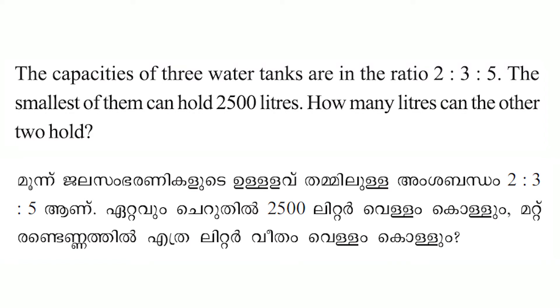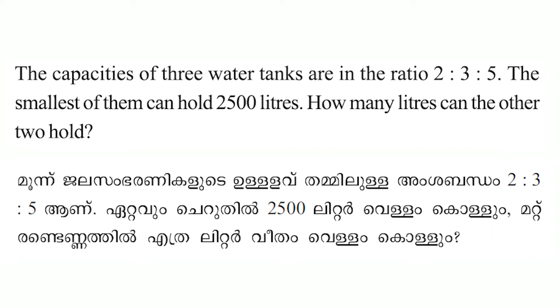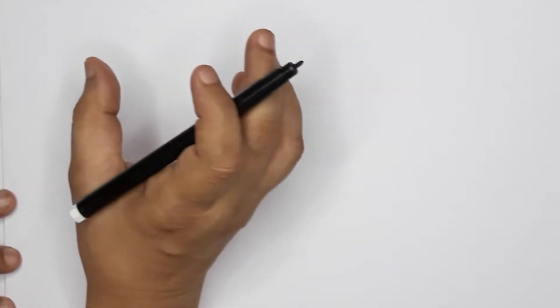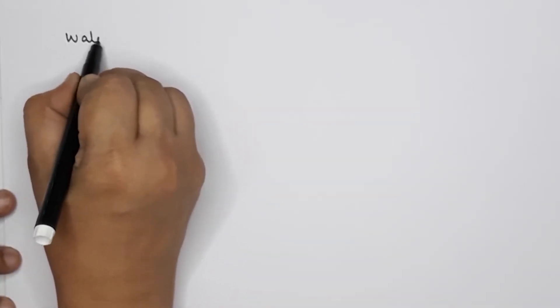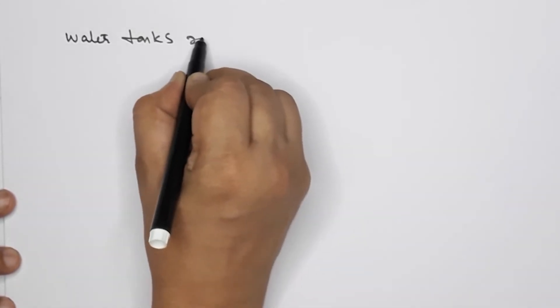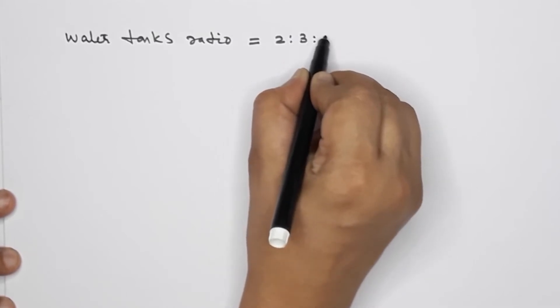Next question: The capacities of three water tanks are in the ratio 2 is to 3 is to 5. The smallest of them can hold 2,500 liters. How many liters can the other two hold? The smallest tank holds 2,500 liters. What is the ratio of the water tanks? 2 is to 3 is to 5.